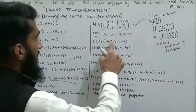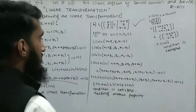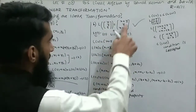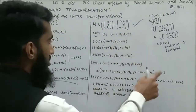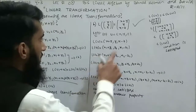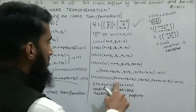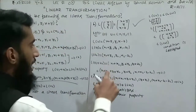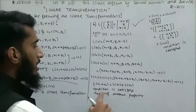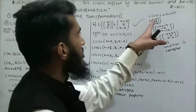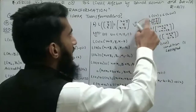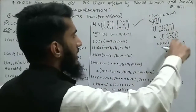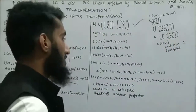L(u1+u2): substitute x1+x2, y1+y2, z1+z2 to get (x1+x2+y1+y2, y1+y2, x1+x2-z1-z2). Adding L(u1)+L(u2) gives the same result. Both conditions match, so the first condition is satisfied. For the second condition, L(cu) = cL(u): taking c common from L(cu) satisfies the condition. Therefore, part B is a linear transformation.